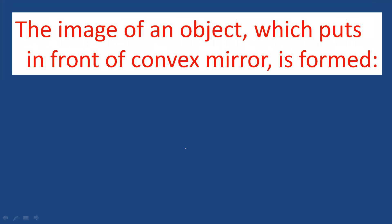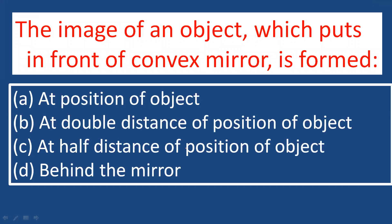The image of an object placed in front of a convex mirror — what is the position of the image? A convex mirror always forms an image that is virtual, erect, and diminished. The position of the image is behind the mirror. The correct answer is option D.